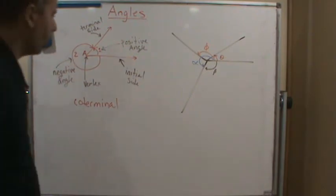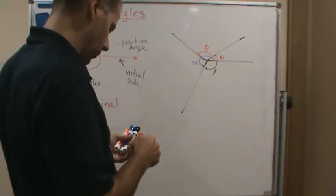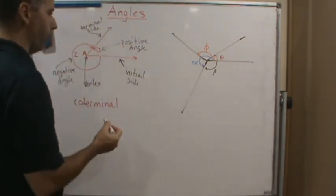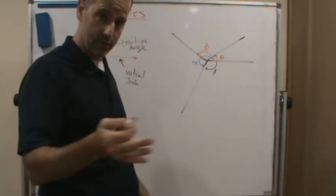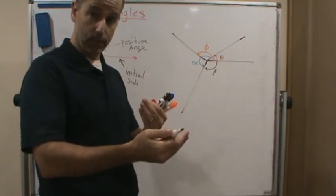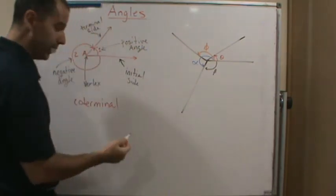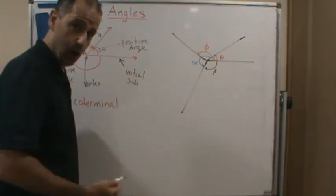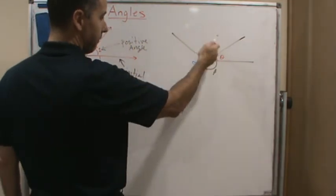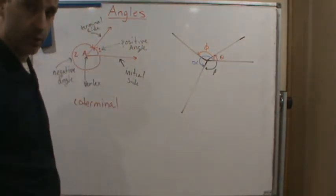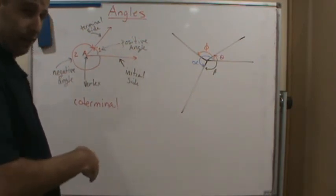Now let's do a little bit of review from earlier videos. Angles can be measured in both degrees and radians. We know that 360 degrees is one full revolution all the way around. We can represent angles in degrees from zero to 360 degrees, or more than that, or negative.